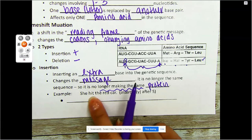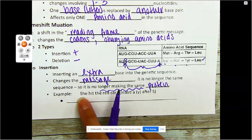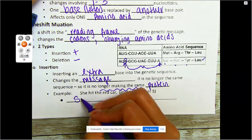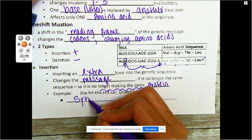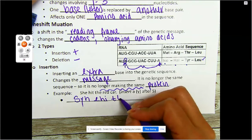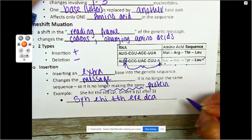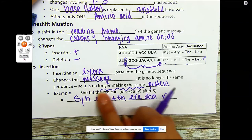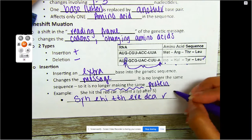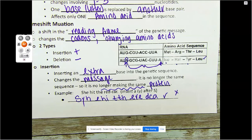Let's use an actual sentence to illustrate. The example is: 'She hit the red car.' We are going to insert a Y after the capital S. Because we read three at a time, the whole message scrambles. Does this give the same message as 'she hit the red car'? No, it's not. I cannot understand that at all — this definitely does not give me the same information.